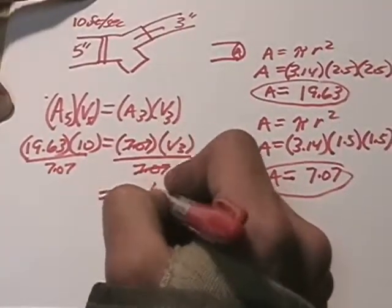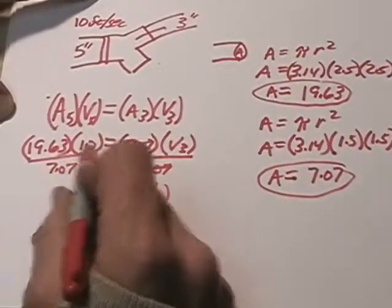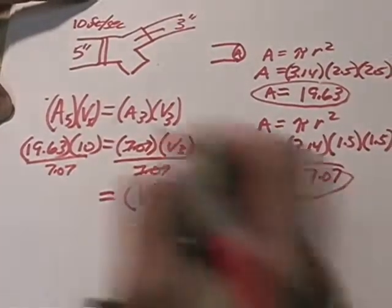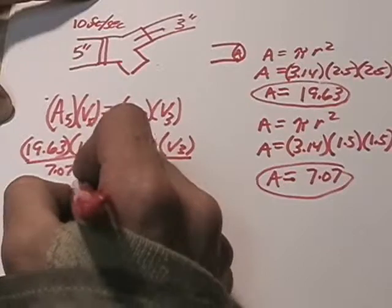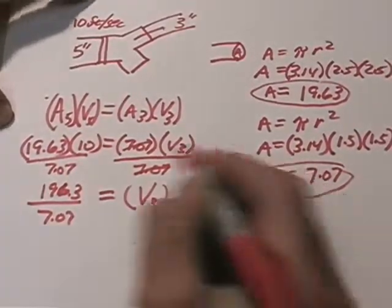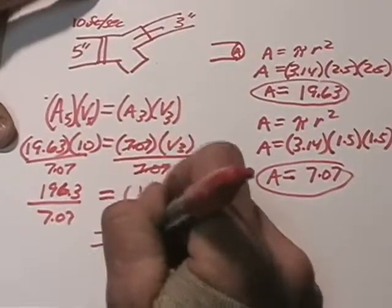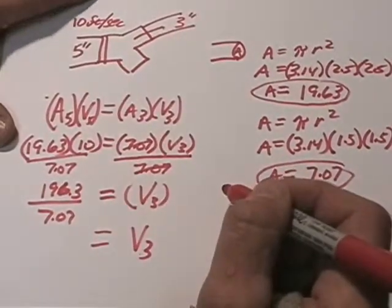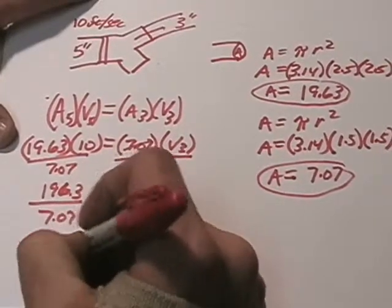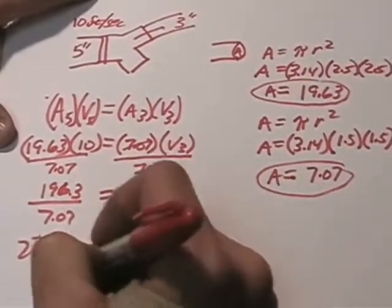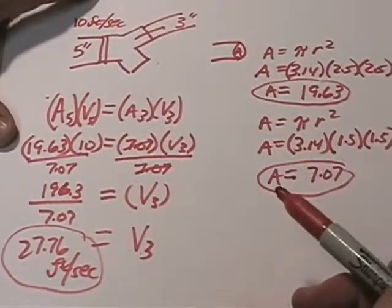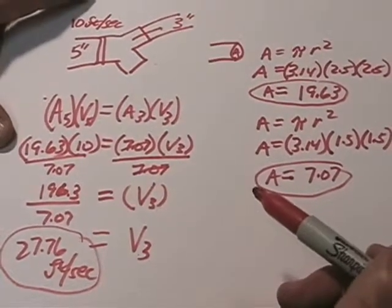And we're left with the velocity of the 3-inch equals 19.63 times 10, which is 196.3 divided by 7.07. When we divide that out, the velocity of the 3-inch is 27.76 feet per second. So our answer is 27.76 feet per second.